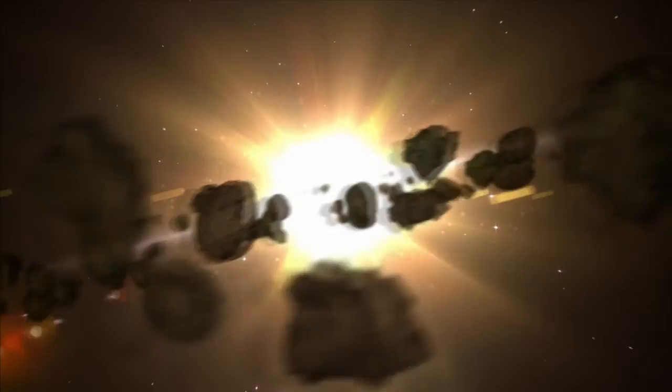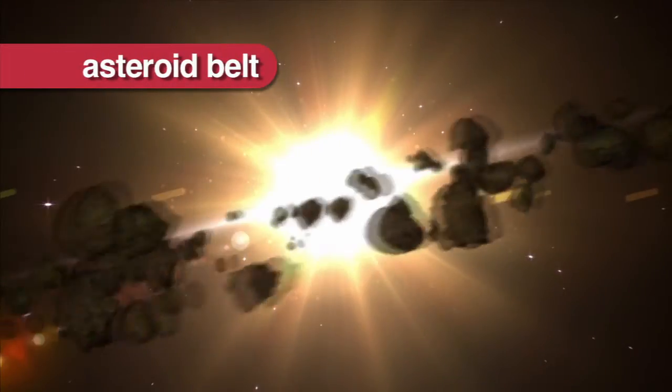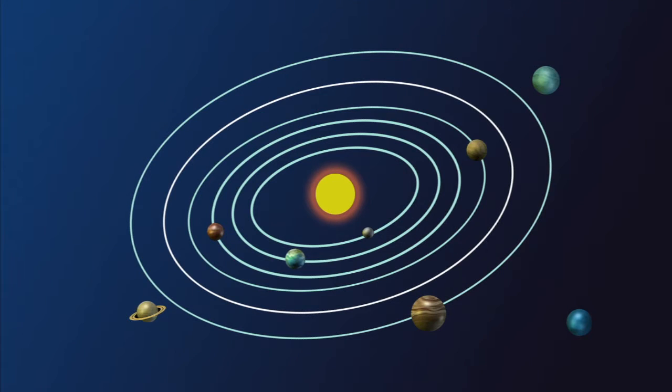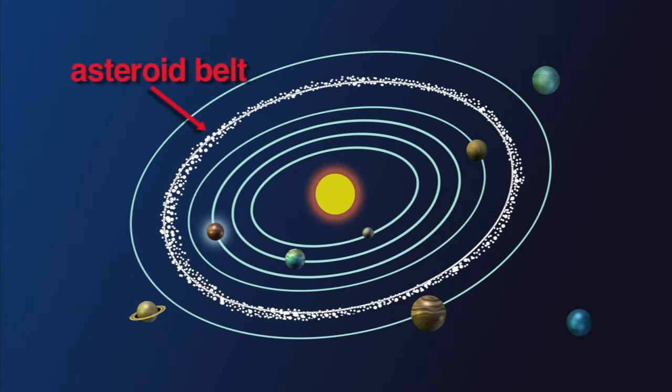Most asteroids are found in the asteroid belt, a region of space between the orbits of Mars and Jupiter where most of the asteroids in the solar system are found.